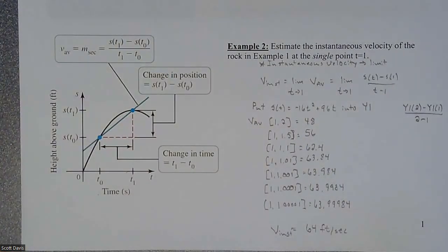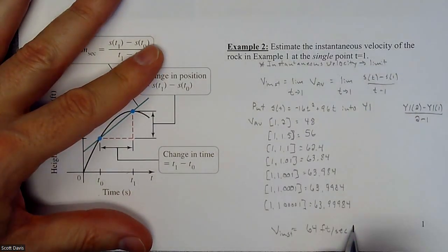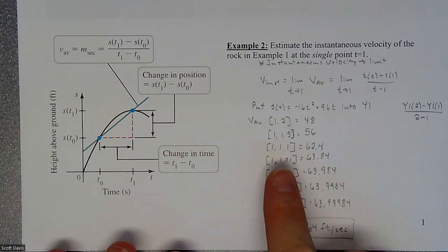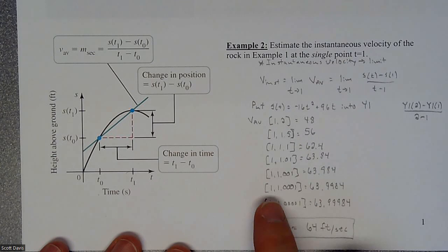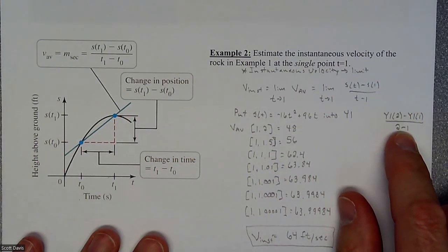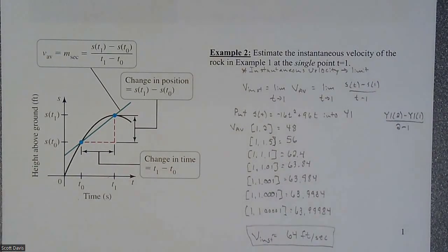Eventually we'll show there's a calculus way to do this with a lot less work and get to this 64 much faster. But this is the core idea of the limit: we're taking a value and getting closer and closer to our starting value, squeezing the denominator toward 1, which drives the numerator to approach a very particular value.